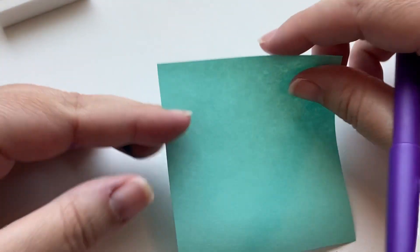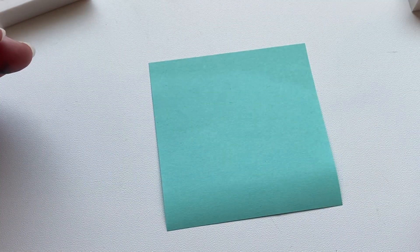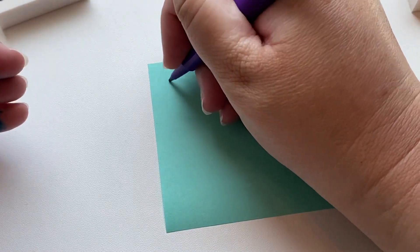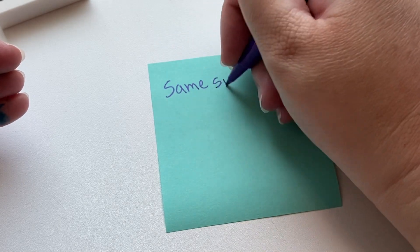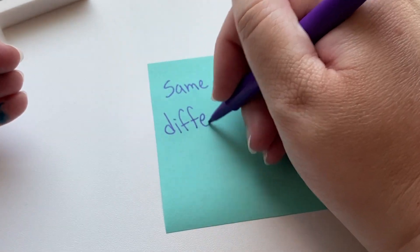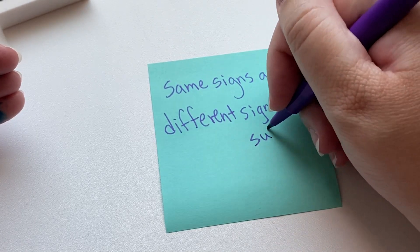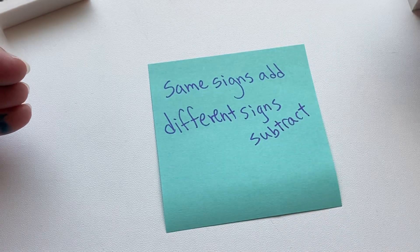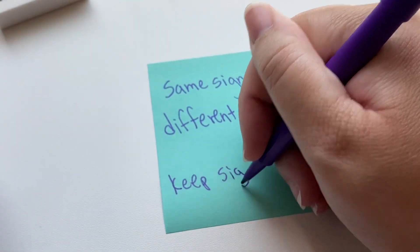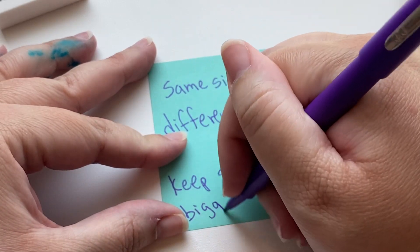They have some rules to help us remember what to do when we add and subtract them. This is what we're going to use as a way to remember what to do: same signs add, different signs subtract, and keep sign of the bigger digit.